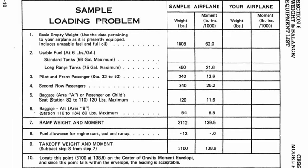I know the weight and balance of the airplane I'm going to fly. The basic empty weight of our airplane is 1,890 pounds and its moment is 66.2 — these are the given numbers from inside the airplane. Cessna's sample shows 1,808 pounds and a moment of 62.0, which is probably the factory average, but our airplane's weight has gone up because the owner added his own IFR instrumentation, GPS, DME, and other equipment — about 80 pounds of additions.